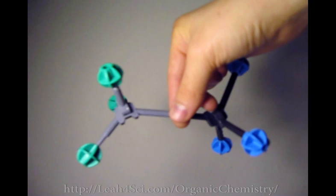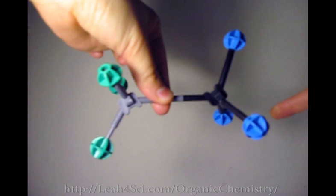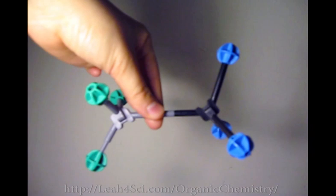So here I have my model kit showing the ethane molecule as drawn on the screen. I have my two carbons and I have two green hydrogens up and one down on the left. I have two blue hydrogens down and one up on the right. When you look at this in a Newman projection, you have the forward carbon eclipsing the rear carbon.